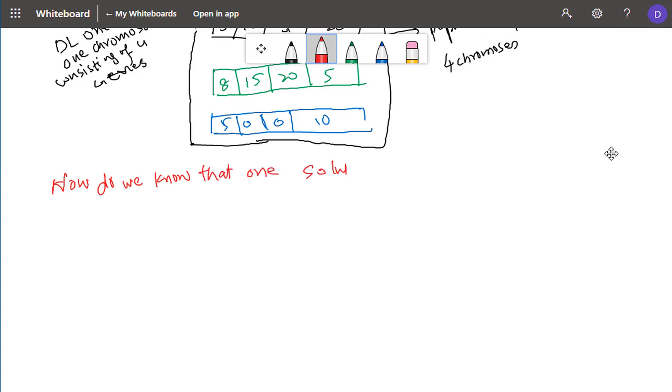So we need a fitness function to solve this problem. Fitness functions are the first to be determined when solving a problem using genetic algorithm.